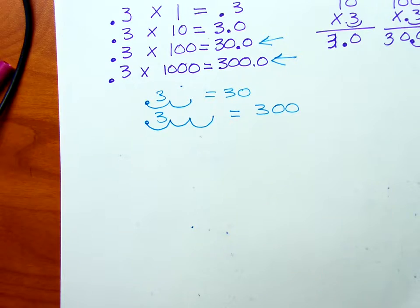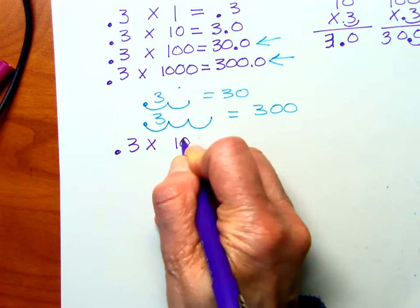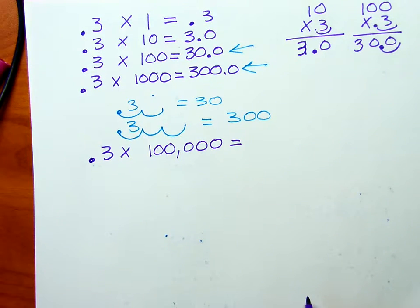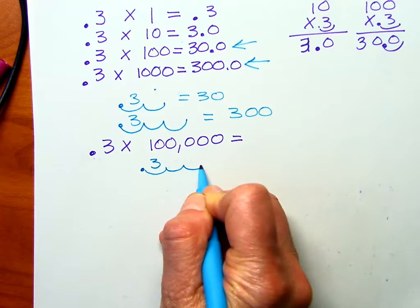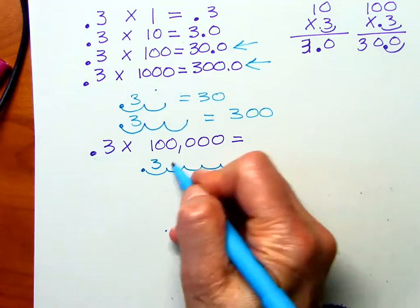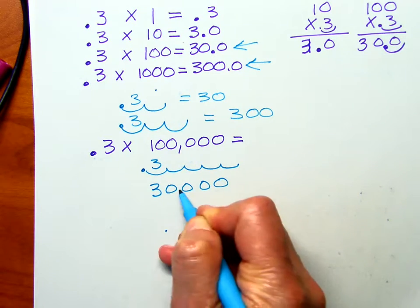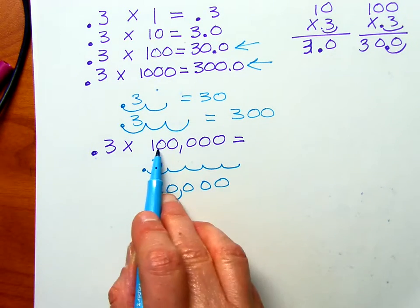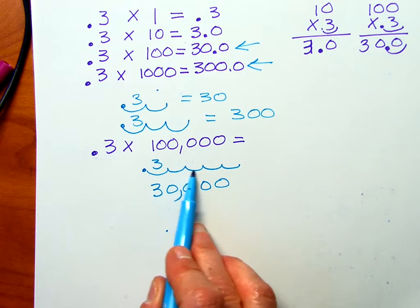What if we have 0.3 times 100,000? What would the answer be? We've got... looks like 30,000. Notice we don't have five zeros in our answer here, even though we had five zeros there. Those zeros are telling us how many places we're moving to the right.